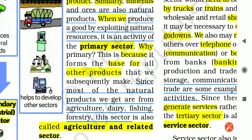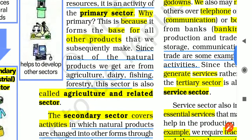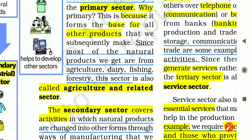The primary sector will be the raw material for all the other goods and products that are going to be manufactured. Since most of the natural products we get are from agriculture, dairy, fishing, and forestry, that is why this sector is also called the agriculture and related sector.